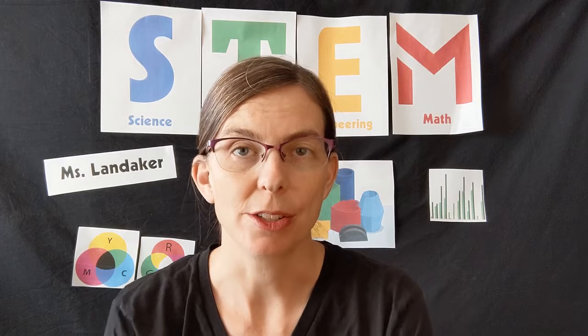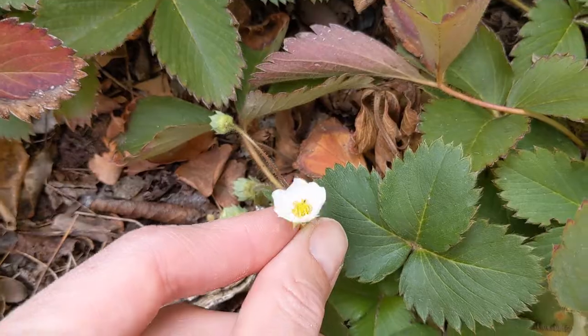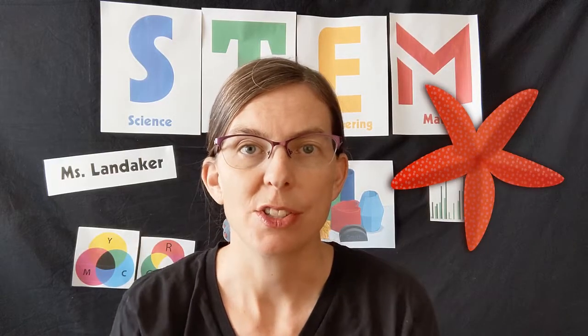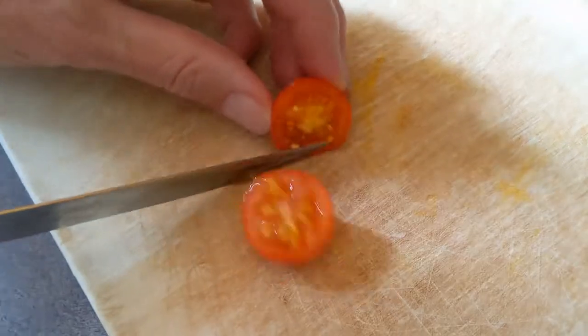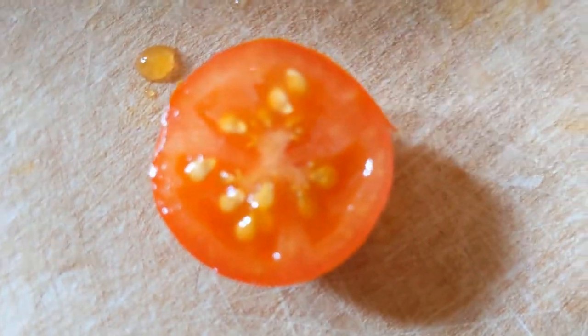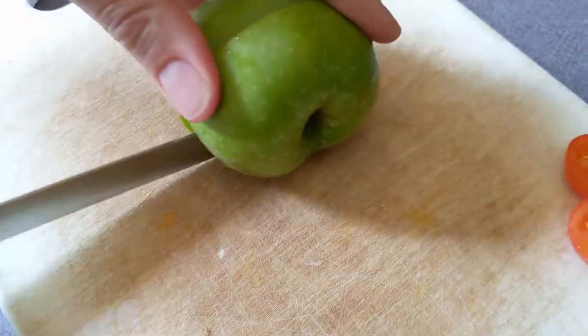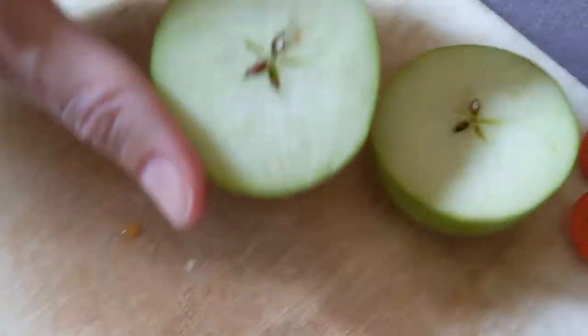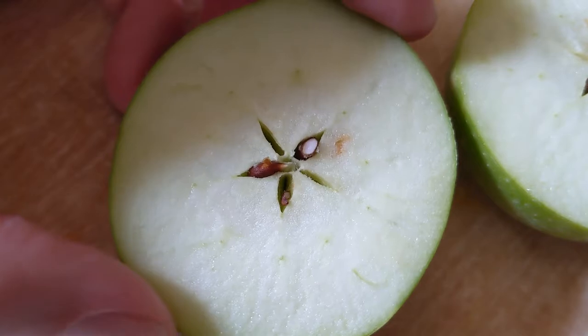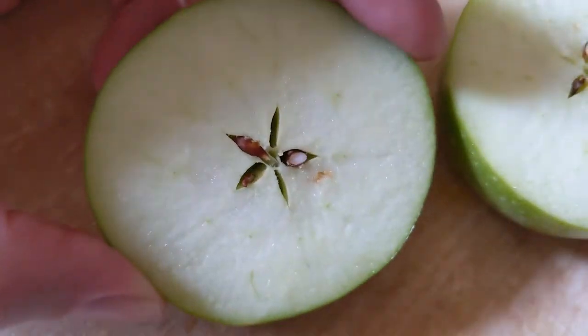Lots of things in nature have radial symmetry especially things that start small and grow outwards like a flower or a starfish or this tomato. I cut it in half so we could see the inside and the inside has radial symmetry. Let's also cut this apple in half and look at the inside. Oh you can see it has radial symmetry too. We can rotate it and it stays the same.